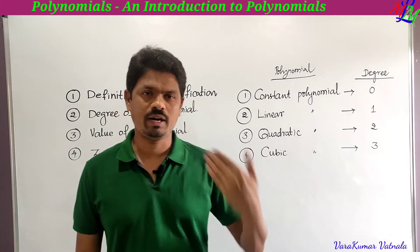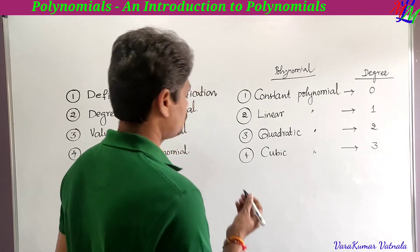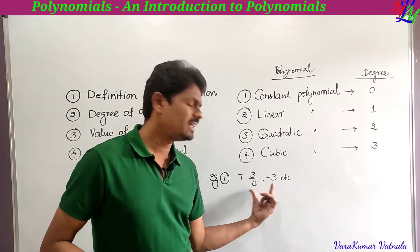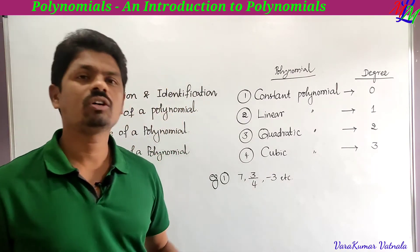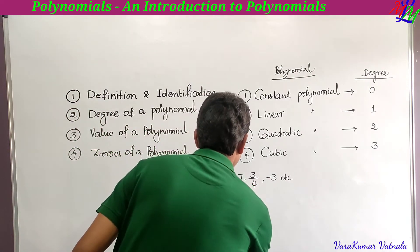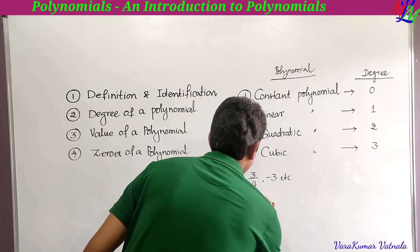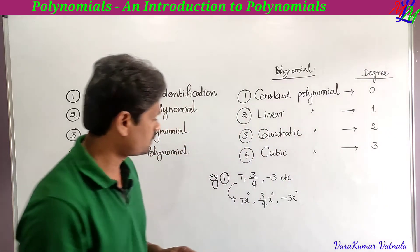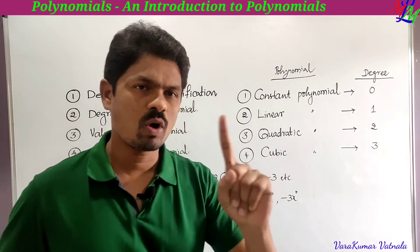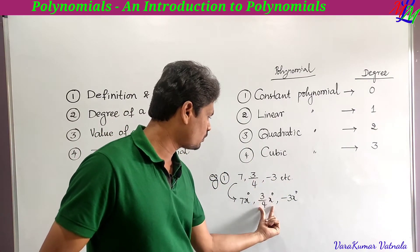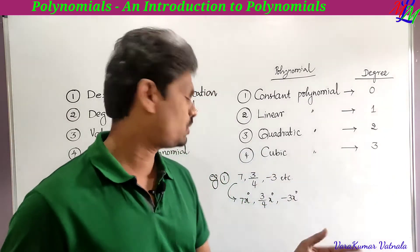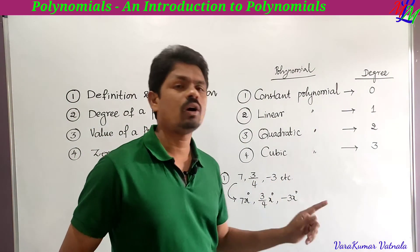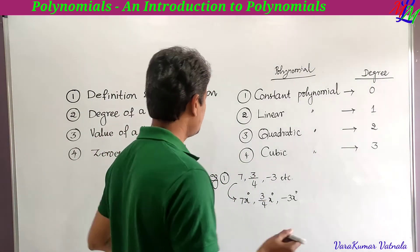Examples of constant polynomials: 7, 3/4, −3 — these have no variables, only numbers. We can think of 7 as 7·x⁰, since x⁰ = 1. Similarly 3/4·x⁰ and −3·x⁰. So all these are constant polynomials with degree 0.